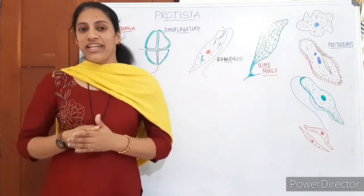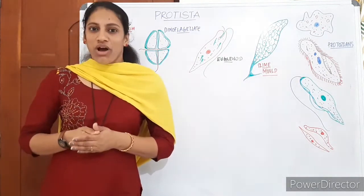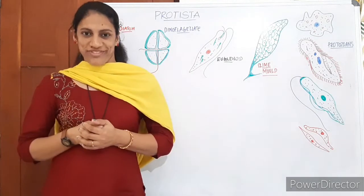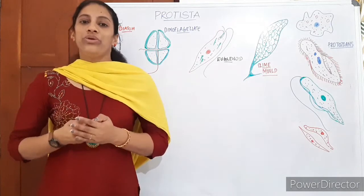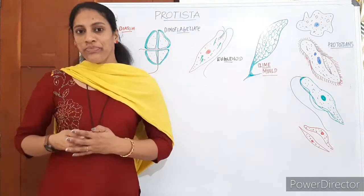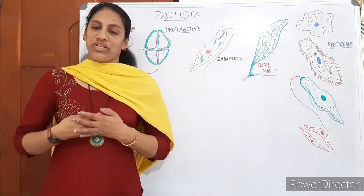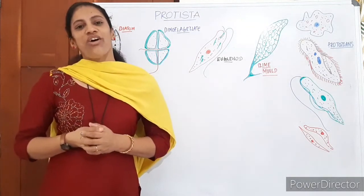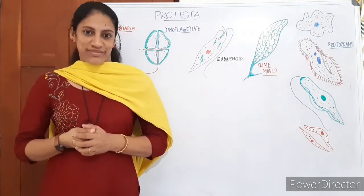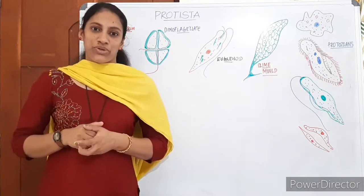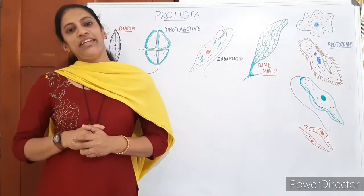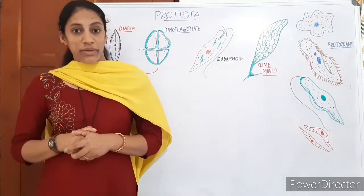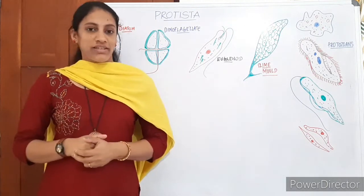Kingdom Protista, as you have studied in ninth class, consists of members which are unicellular but eukaryotes. The kingdom Protista consists of unicellular eukaryotes. It consists of a true nucleus — a membrane-bound nucleus — and it also contains cell organelles like mitochondria, Golgi apparatus, etc.